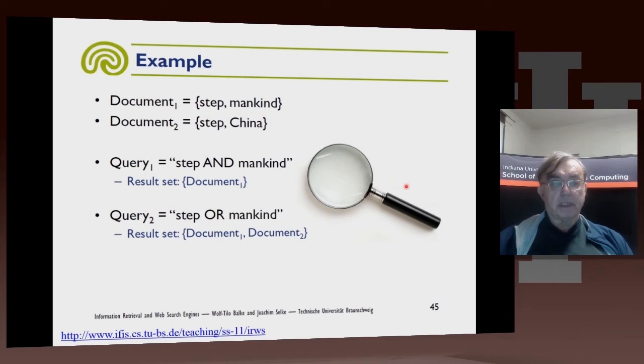So here's an obvious example. Two trivial documents, one with Step and Mankind, and one with Step and China. If you do a query Step AND Mankind, you'll get Document 1. If you do Step OR Mankind, you will get Document 1 or Document 2.